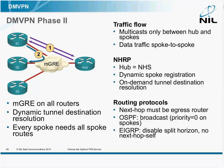The next step from phase 1: we have MGRE on all the routers, hubs and spokes. Multicast still flows only between the hub and the spokes, but the data traffic can flow spoke to spoke.